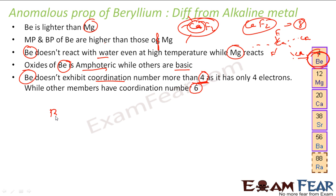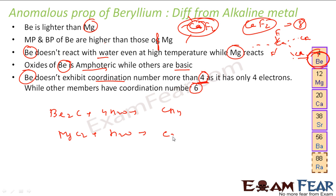Another difference is that beryllium carbide reacts with water to give methane, but magnesium carbide reacts with water to give acetylene. There is a difference in the products. Writing the full reactions: beryllium carbide with water gives methane and beryllium hydroxide, while magnesium carbide gives magnesium hydroxide and acetylene.